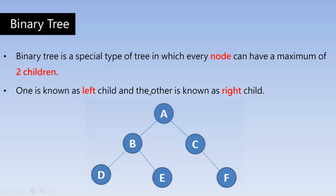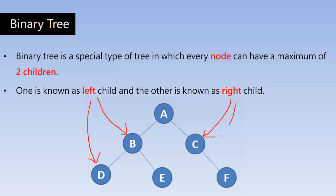One is known as left child and the other one is known as right child. This node is known as left child and this node is known as right child. Same with this left child and right child. But here, it has just got right child. So this is a binary tree where every node has got a maximum of two children, but there can be one child also.